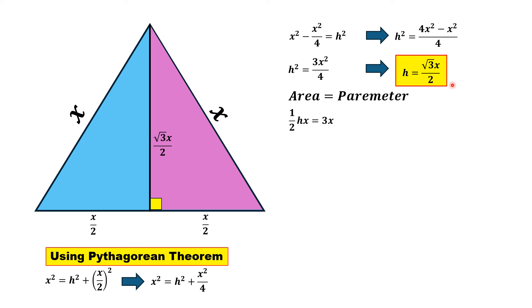Substituting the value of h, which is √3x/2, into this equation, after simplification we have √3x²/4 = 3x. Multiplying both sides by 4, we have √3x² = 12x.